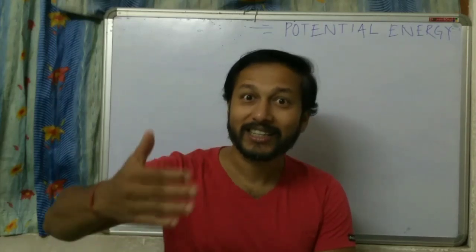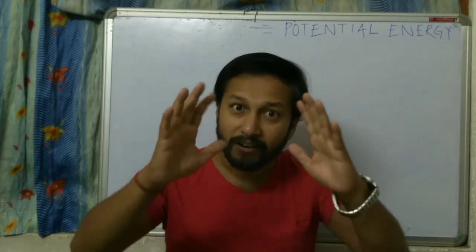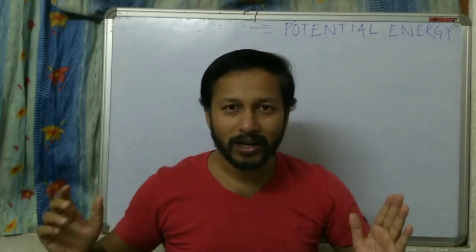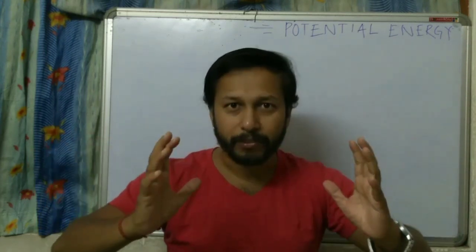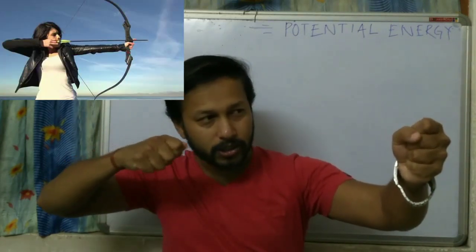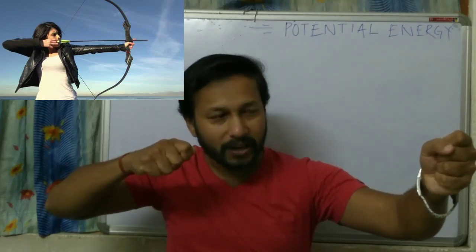Now I will discuss about potential energy. Before the formal discussion, let us look at some examples. First example: an inflated balloon. When you press the balloon from both sides and then let it go, it returns to its original shape — that pressing is work done, and that is potential energy. Second example: bow and arrow. When you pull the bowstring, that is work done, and that work is called potential energy.